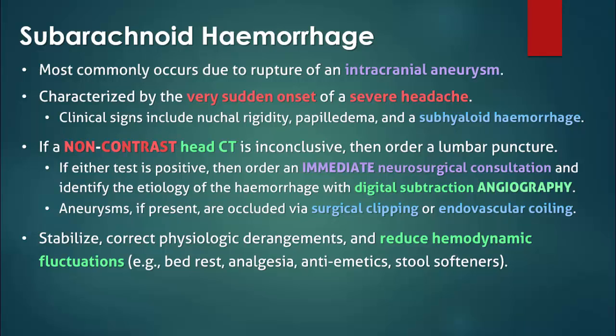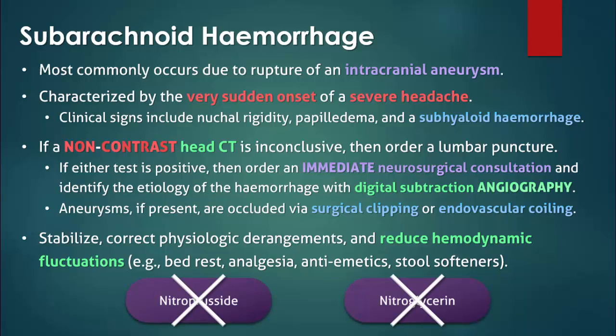Initial management begins with patient stabilization and the correction of any physiologic derangements. You must aim to maintain euvolemia — if the patient is hypotensive, then give intravenous fluids, but do not overhydrate the patient. For hypertensive patients, the general recommendation is to maintain blood pressure below 160 mmHg with a titratable intravenous antihypertensive, such as labetalol, nicardipine, or enalapril. Nitroprusside and nitroglycerin, however, should be avoided as they can increase intracranial pressure.